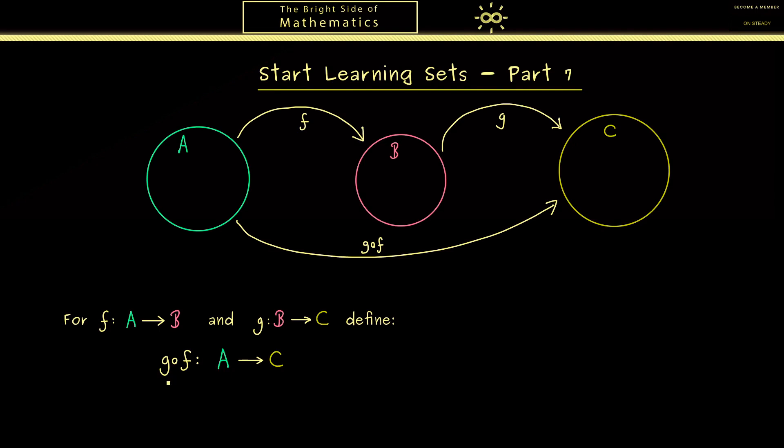And then we can define the new map G circle F from A into C. A better way to read this would be G composed with F or just G after F.